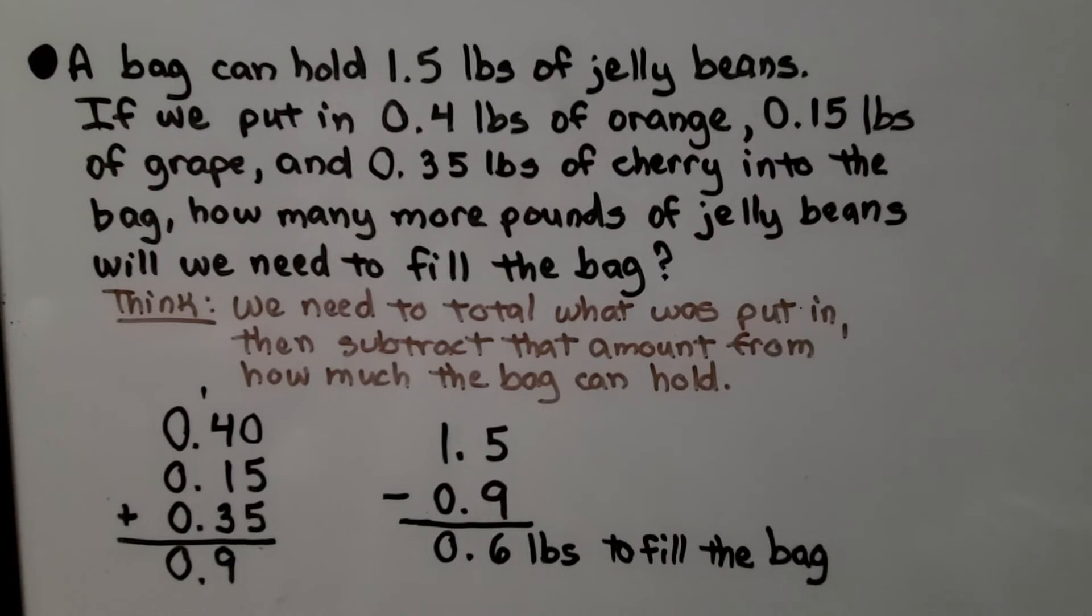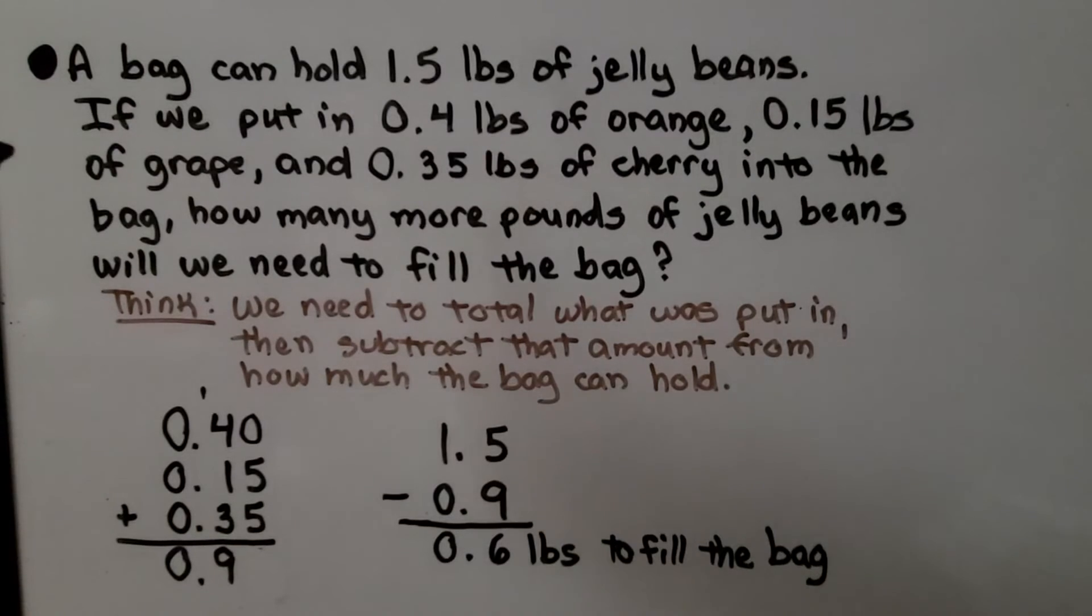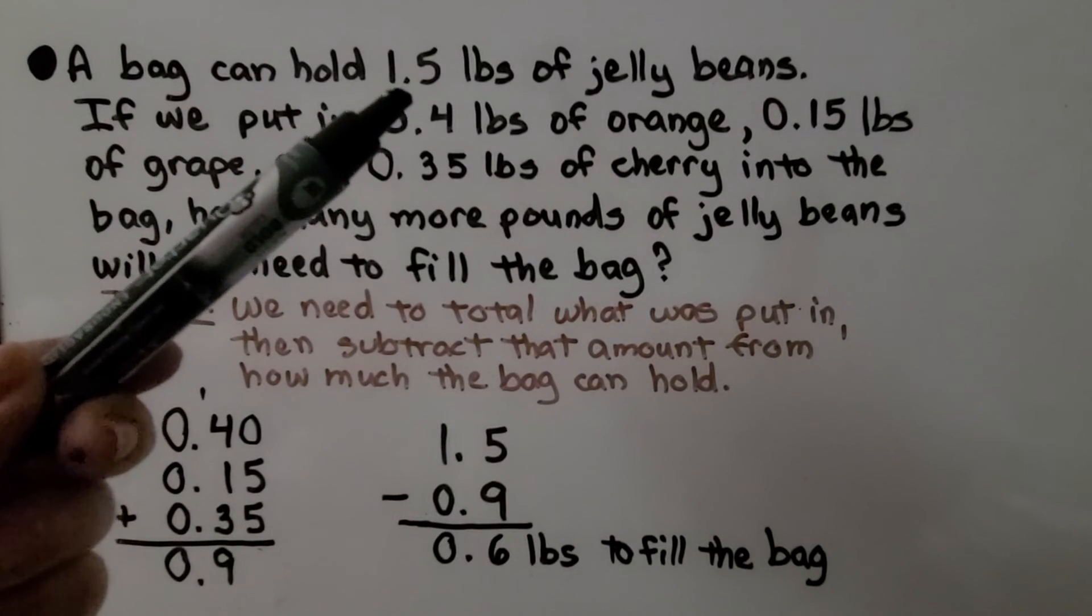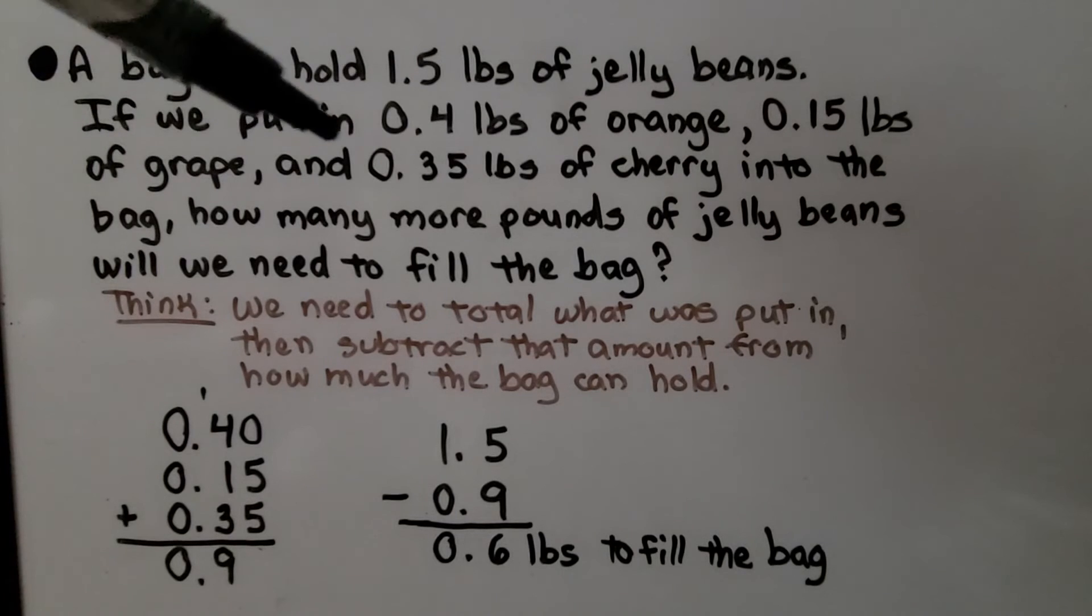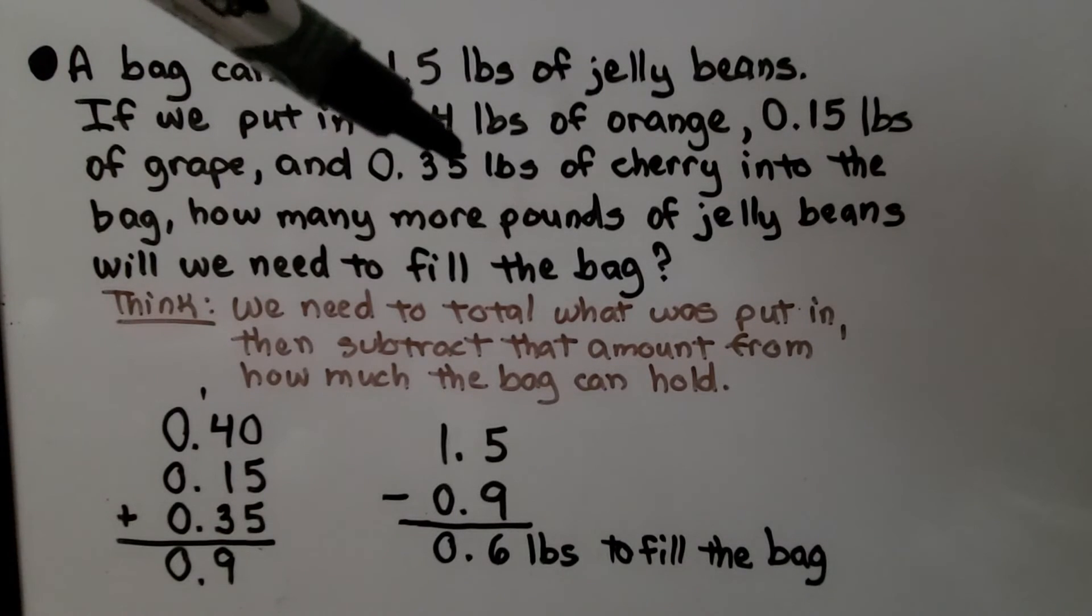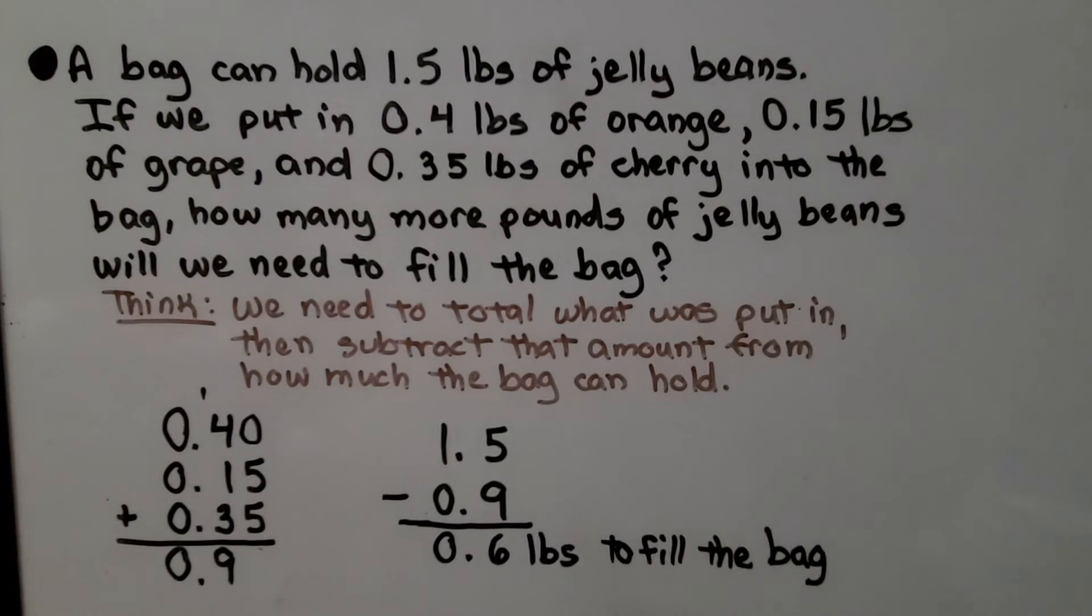Here we have a multi-step word problem. It says a bag can hold 1 and 5 tenths pounds of jelly beans. If we put in 4 tenths pound of orange, 15 hundredths pound of grape, and 35 hundredths pound of cherry into the bag, how many more pounds of jelly beans will we need to fill the bag? And we think we need to total what was put in, the orange, grape, and cherry, then subtract that amount from how much the bag can hold.